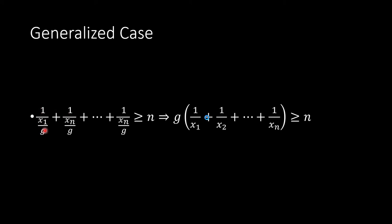1 over x1 divided by g plus 1 over x2 divided by g, all the way to 1 over xn divided by g. This must be larger than or equal to n from the lemma.